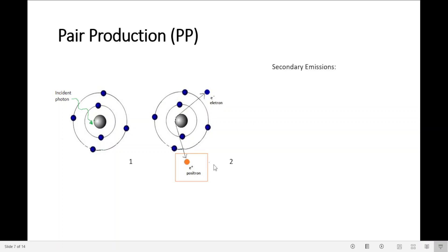There are secondary emissions in pair production. Let's take a close look at the positron. The positron will travel two to three millimeters in matter, interact with an electron, and there is the conversion of matter into energy.